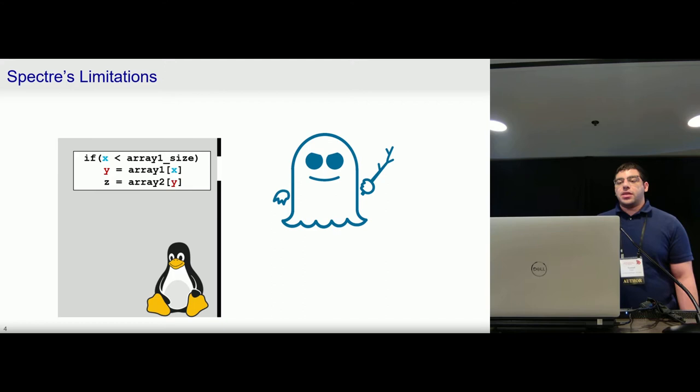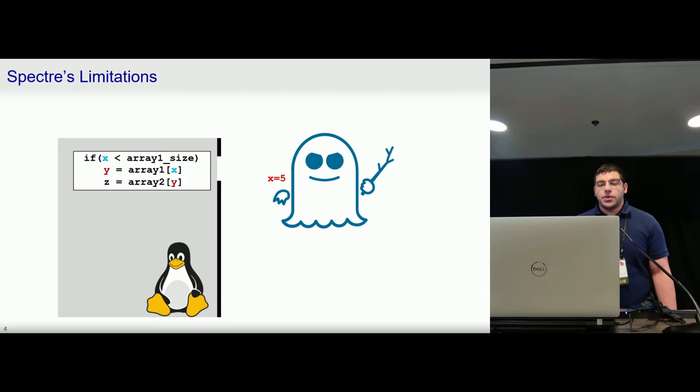Now, while this is powerful, Spectre does have a key limitation in that it requires the attacker to control the variable X. For example, suppose there is a gadget in the Linux kernel that we want to exploit to arbitrarily read kernel values. We require a syscall that allows us to pass in values of X as an argument to the syscall so that we can manipulate this gadget to arbitrarily read these values and target the secrets we want to target.